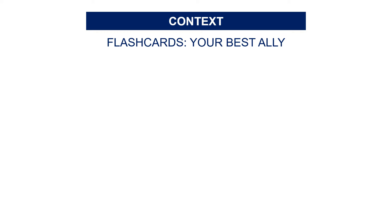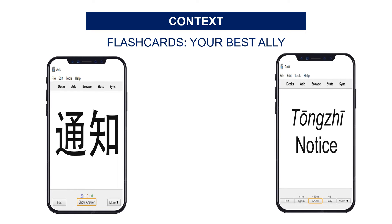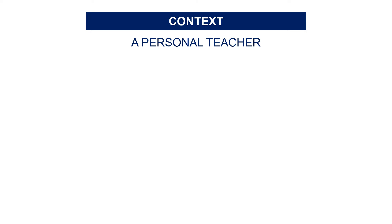Let's take an example: you want to practice your Mandarin and you have a list of vocabulary. Anki will first show you the Chinese character — Hanzi. Here it's a word meaning 'notice', like a written notice on a poster. Then Anki will show you the answer: the translation, the phonetic transcription called Pinyin, and the sound. You now have a kind of personal teacher to help you improve your Mandarin.